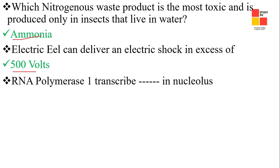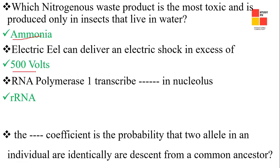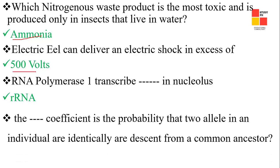Next one: the electric eel can deliver an electric pulse in excess of 500 volts. Next one: RNA polymerase I transcribes a type of ribosomal RNA in the nucleus.